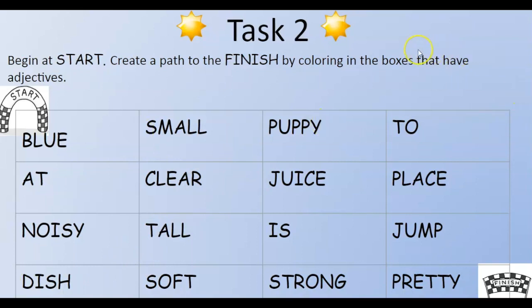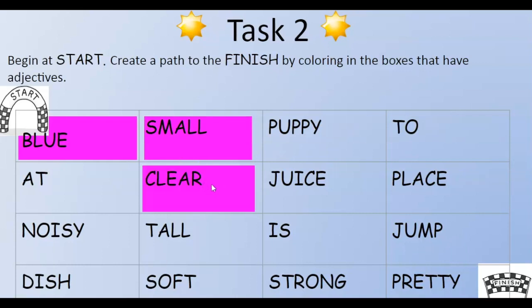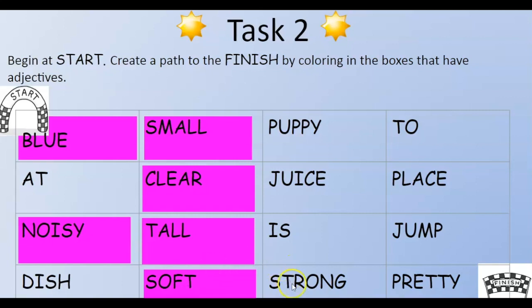Okay, now we are going to check. The first adjective would be blue, then small, then clear, noisy when there is a lot of noise, or somebody can be really tall, soft, strong, and pretty. Wow, we got to the finish line. Very good.